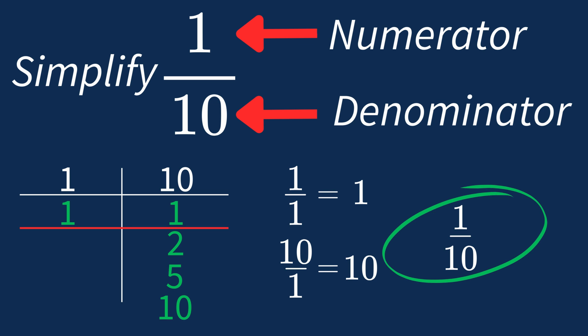Meaning it's as simple as it can get. In future, if the largest common factor is 1, that fraction is already simplified.